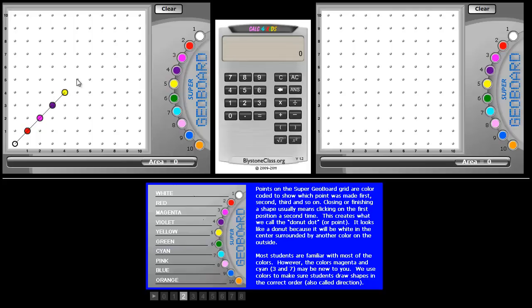For example, the color coding allows teachers to point out that lines can have direction. The same line can be drawn going from the bottom up, or it can be drawn starting at the top and go down.